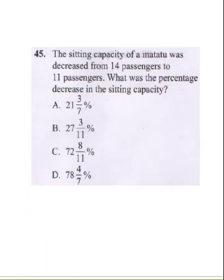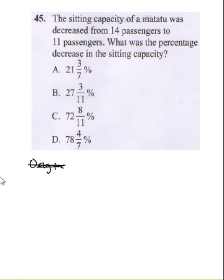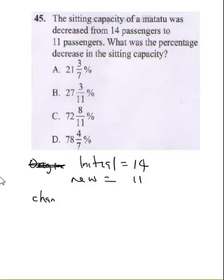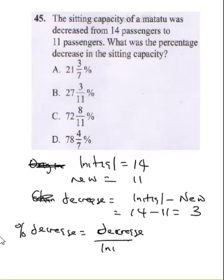The next question says the seating capacity of a matatu decreased from 14 passengers to 11 passengers. What was the percentage decrease in seating capacity? The initial value is 14, the new value is 11. The decrease is initial minus new: 14 minus 11 equals 3. The percentage decrease formula is: decrease divided by initial, times 100.